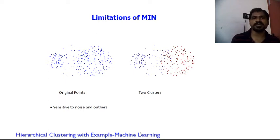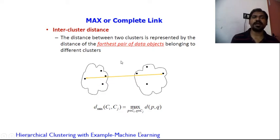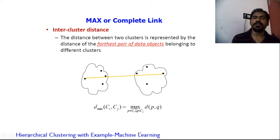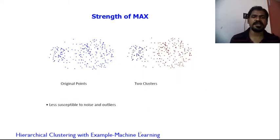The second way of representation is maximum or complete link. Here we compute the farthest pair of data points — obtaining the maximum distance between p and q — and use that maximum value to update the distance matrix. The dendrogram and nested clusters are formed accordingly. The strength of complete link is that it is less susceptible to noise and outliers.